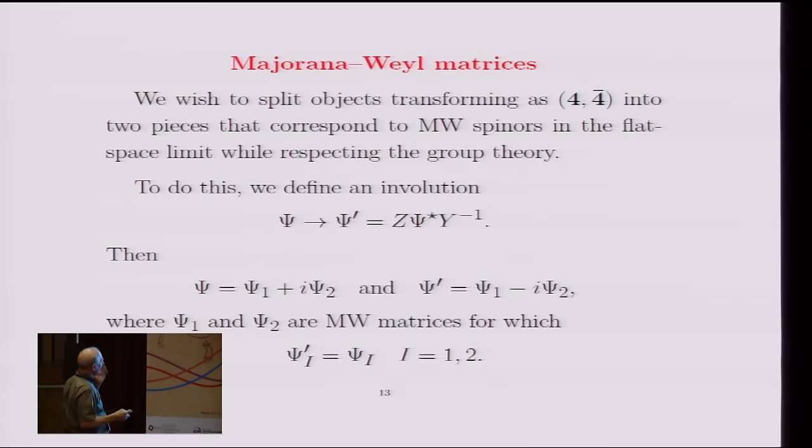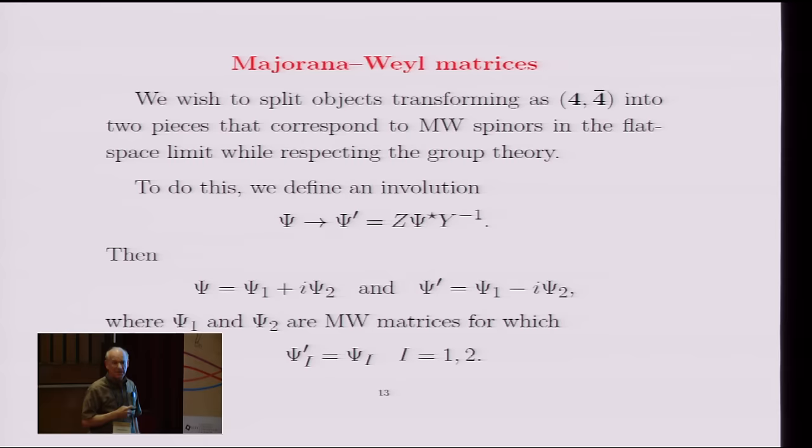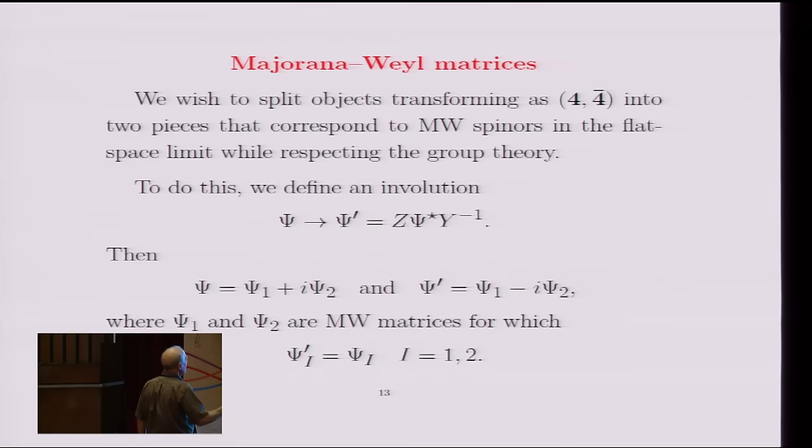And to do this, it turns out we have to introduce an involution, which is just a kind of deformation of complex conjugation, which becomes obvious when you think about how things transform under these groups. This is really the only thing you can write down that transforms in the right way under SU(2,2) times SU(4). And because of the unitarity of these matrices Z and Y, this is an involution. If you do it twice, you get back to where you started. And so this is kind of a deformation of complex conjugation.